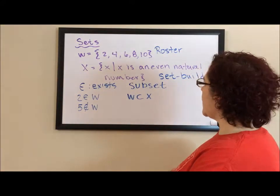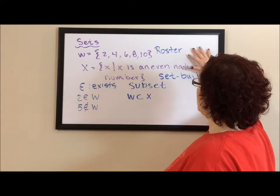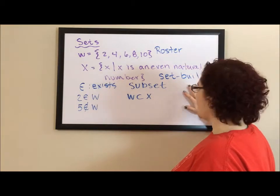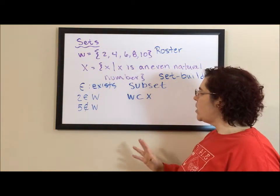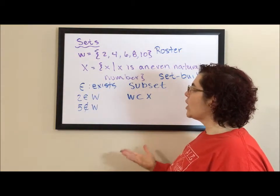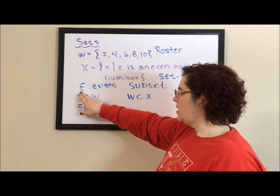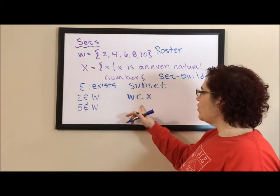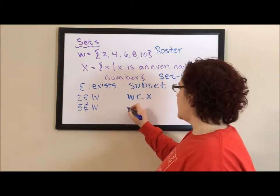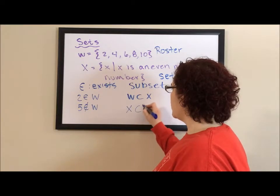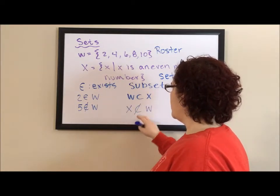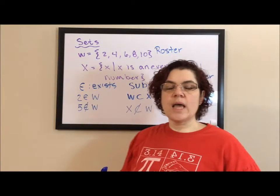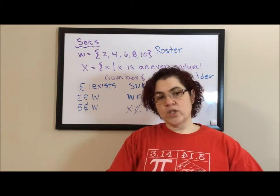So the basics of what we talked about today are two common ways of writing a set: roster notation and set builder notation. And we talked about some of the words that go with sets. This funky E, which means exists, slash through it means doesn't exist. The same with subsets. I could say X is not a subset of W. So we can look at individual elements. We can look at whole subsets to determine how they relate to each other.